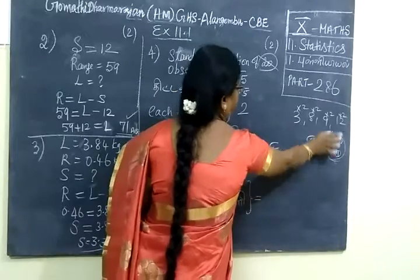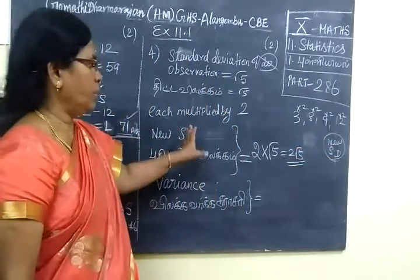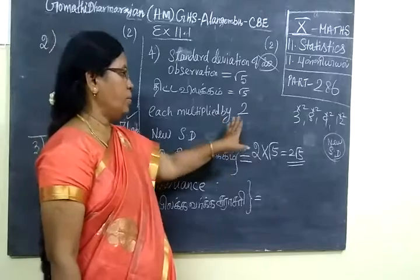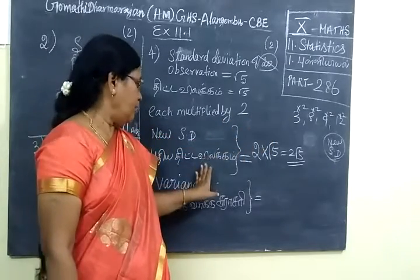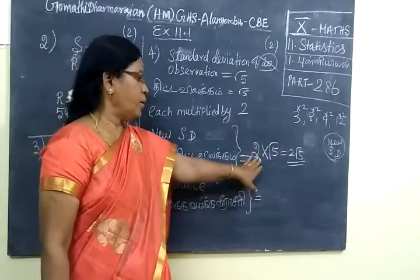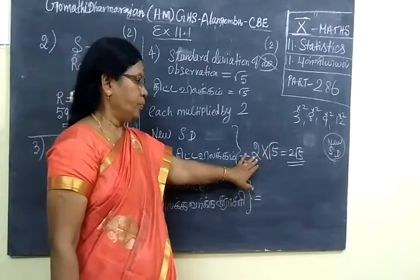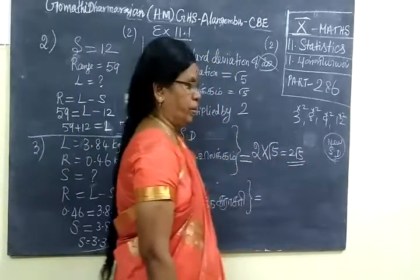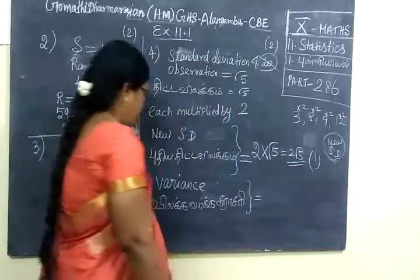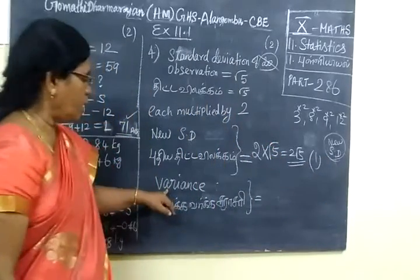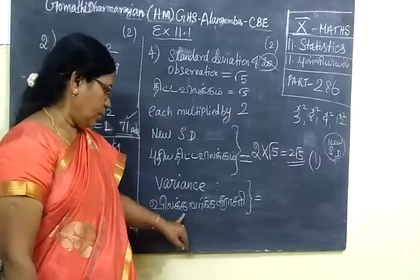This is the whole answer. When each value is multiplied by 2, standard deviation is also multiplied by 2. It is a property. The answer is 2 root 5. One more — you have to find the variance also.